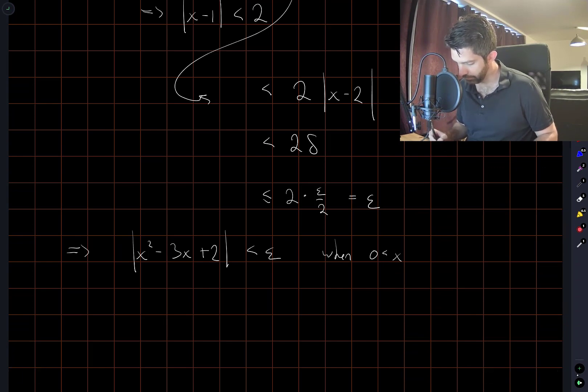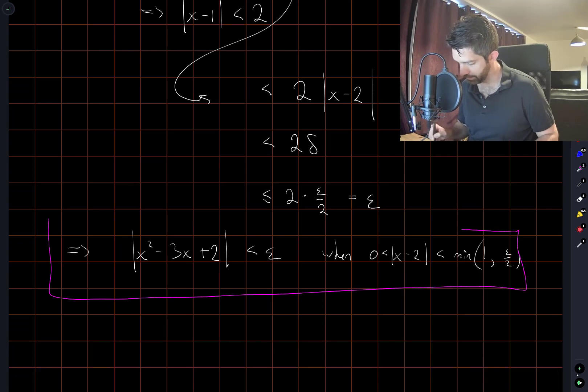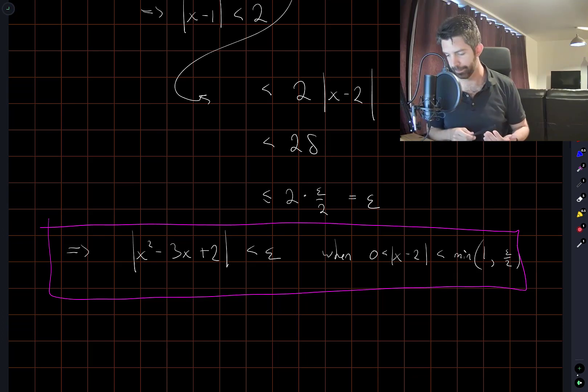When 0 is less than x minus 2 less than the minimum of 1 and epsilon over 2. And that does it. That shows that our limit is the value we wanted according to the precise definition of limit.